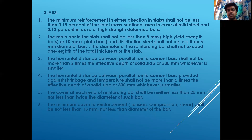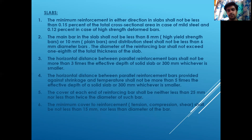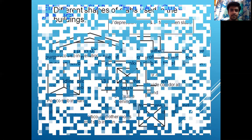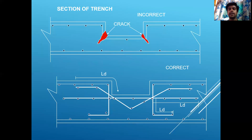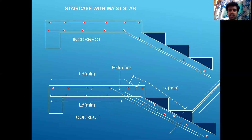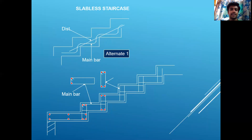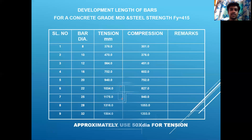For slabs, minimum reinforcement must not be less than 0.15% for mild steel and 0.12% for high-strength deformed bars. Different shapes of slab are used in buildings, and different drawings apply to each. For stairs, detailing shows longitudinal reinforcement and shear stirrups labeled separately. Reinforcement tables should be generated wherever possible for clarity.